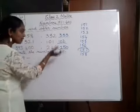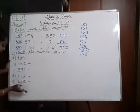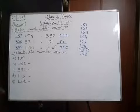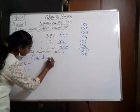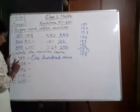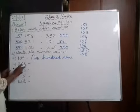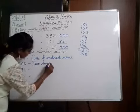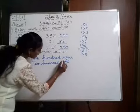Say the numbers, then you have to write. Next, write the number name. You have to write the number name of these numbers. First one: 109. How are you going to write the number name? The number name for 109 is one hundred and nine. Next, 208 — the number name is two hundred and eight. Write the spelling correctly.